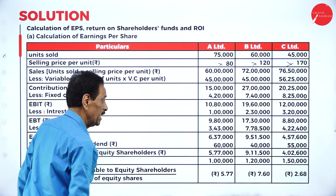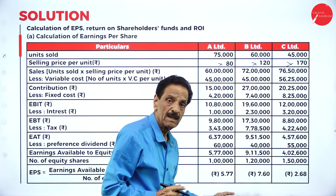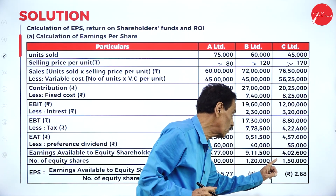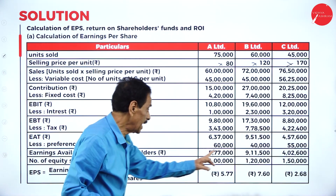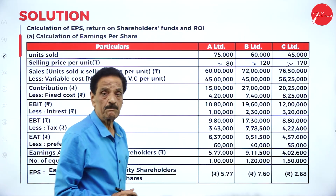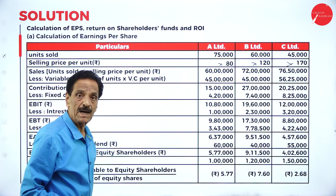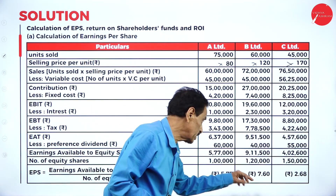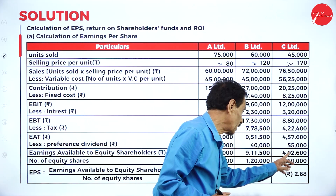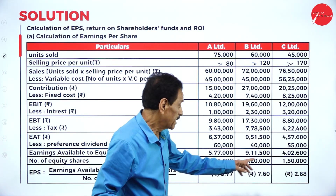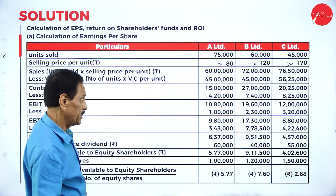Number of equity shares given: 1 lakh; 1 lakh 20,000; 1 lakh 50,000. Earning per share: 5 lakh 77,000 divided by 1 lakh = 5.77; 9 lakh 11,500 divided by 1 lakh 20,000 = 7.60; 4 lakh 2,600 divided by 1 lakh 50,000 = 2.68.